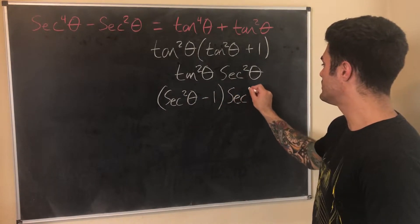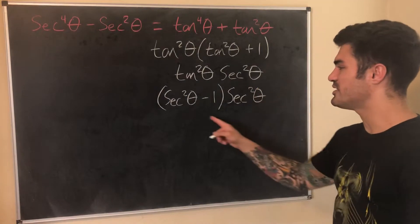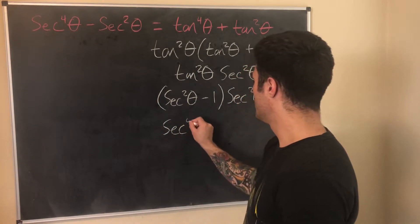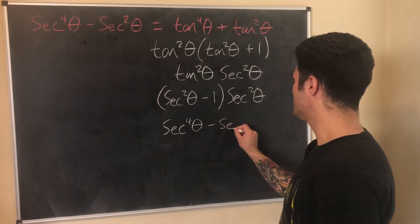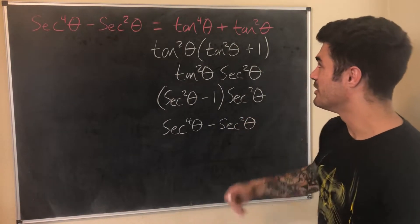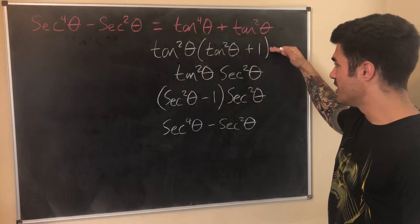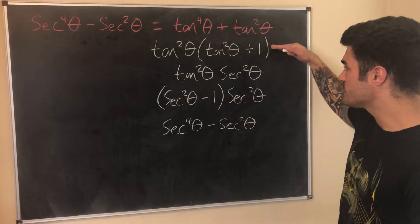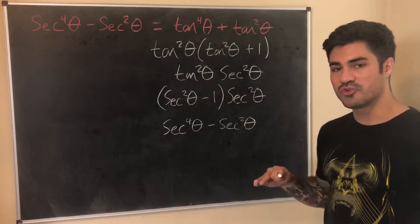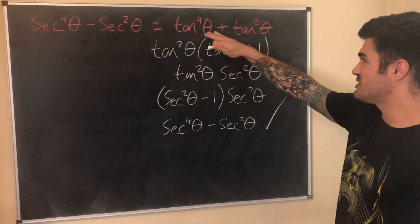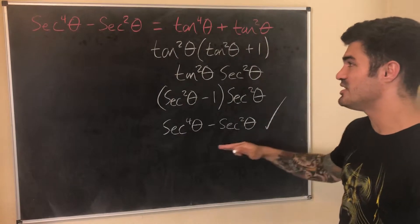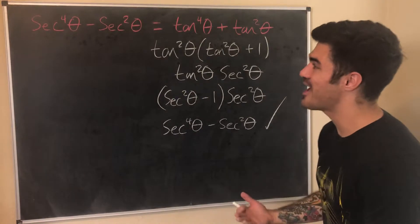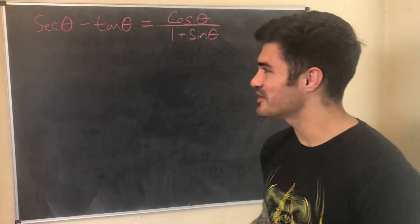Now I have (sec²θ − 1) · sec²θ. Multiplying this out gives sec⁴θ − sec²θ, which is exactly what I was trying to get. So the steps were: factor (algebra), use an identity, use another identity, then multiply (algebra). We've shown that tan⁴θ + tan²θ equals sec⁴θ − sec²θ, and that's what it means to establish an identity.